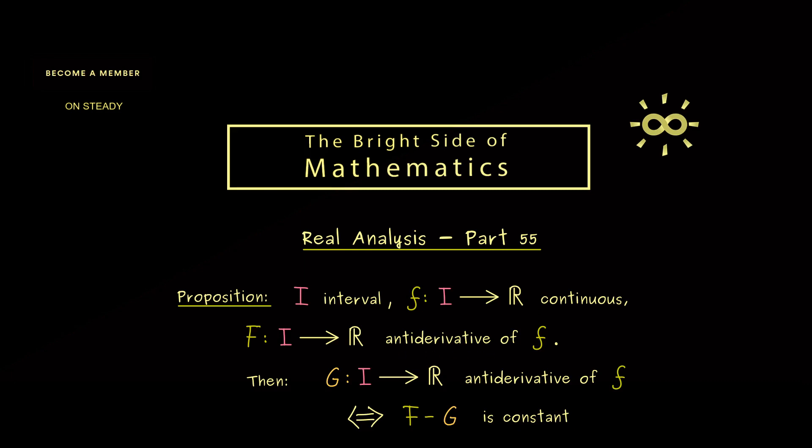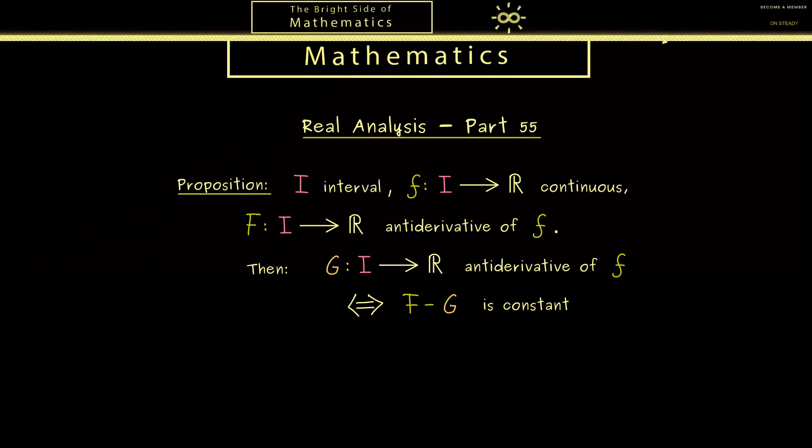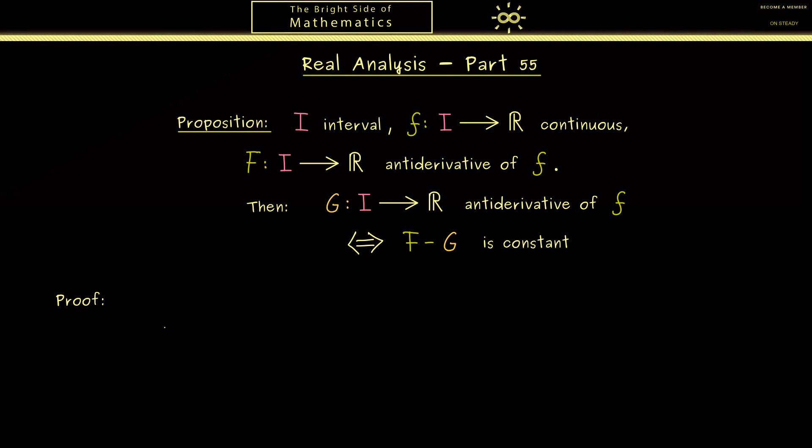So you see this proposition here is a nice result we can use, and therefore we should talk about the proof. And because we want to show an equivalence, the proof consists of two parts. So we just start with the first implication from left to right.